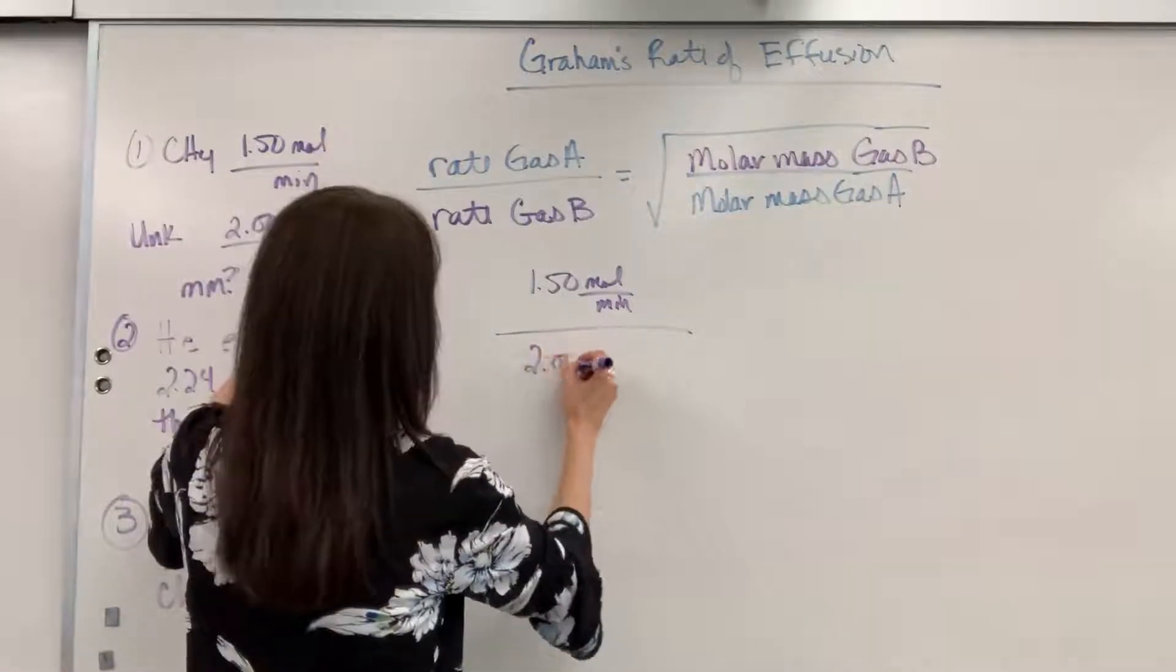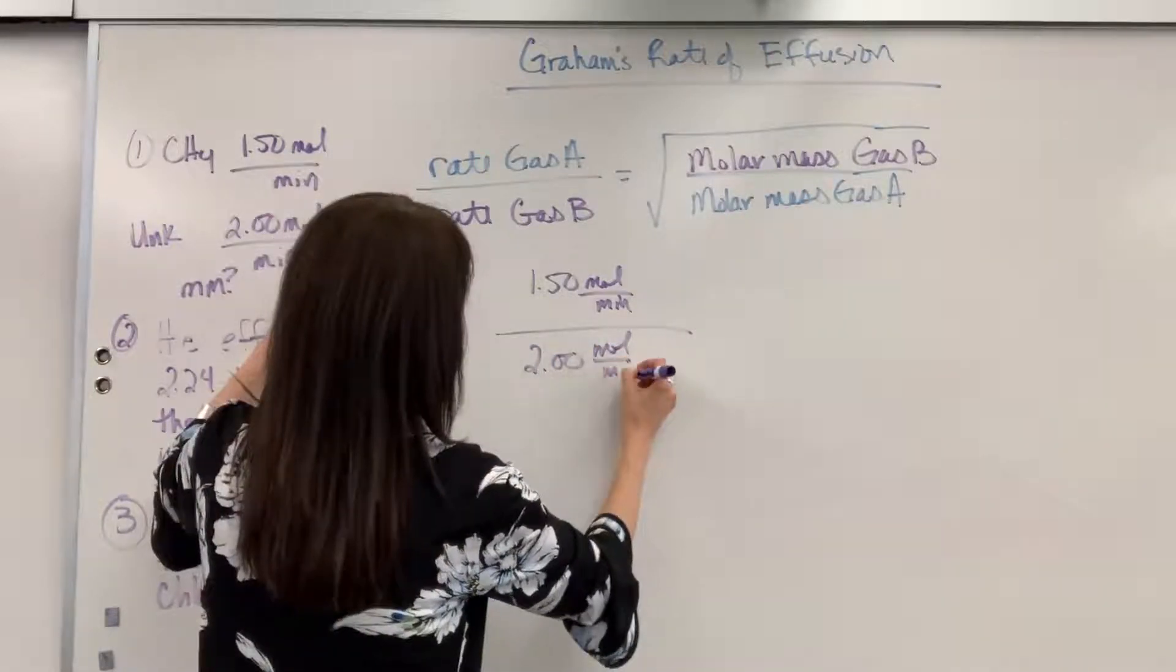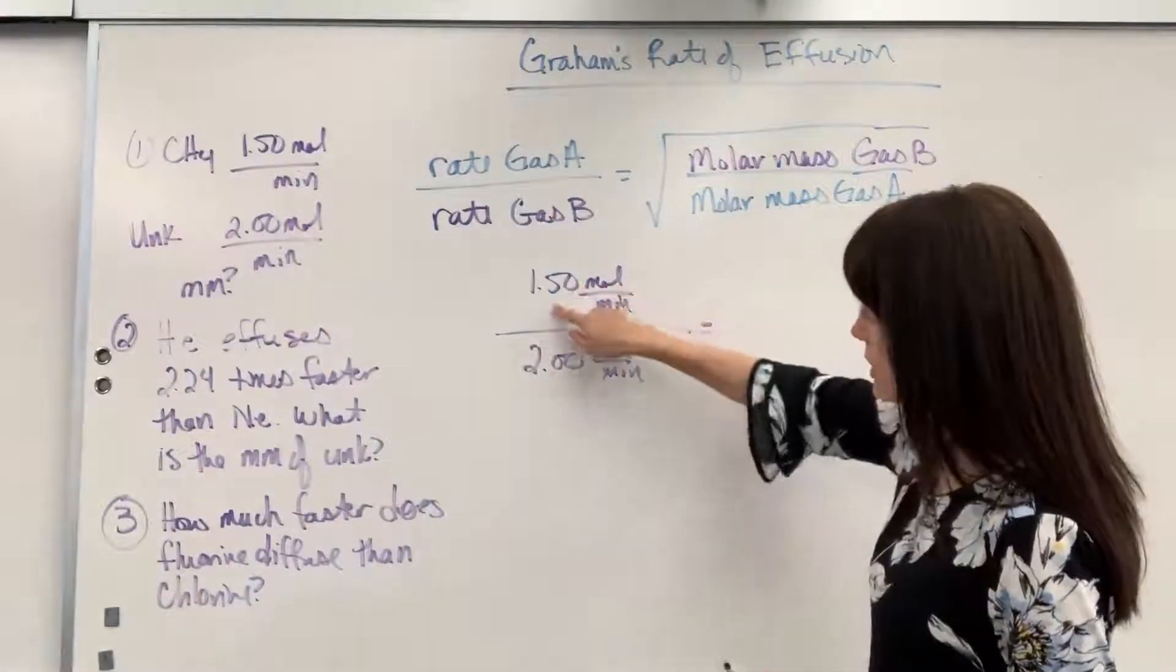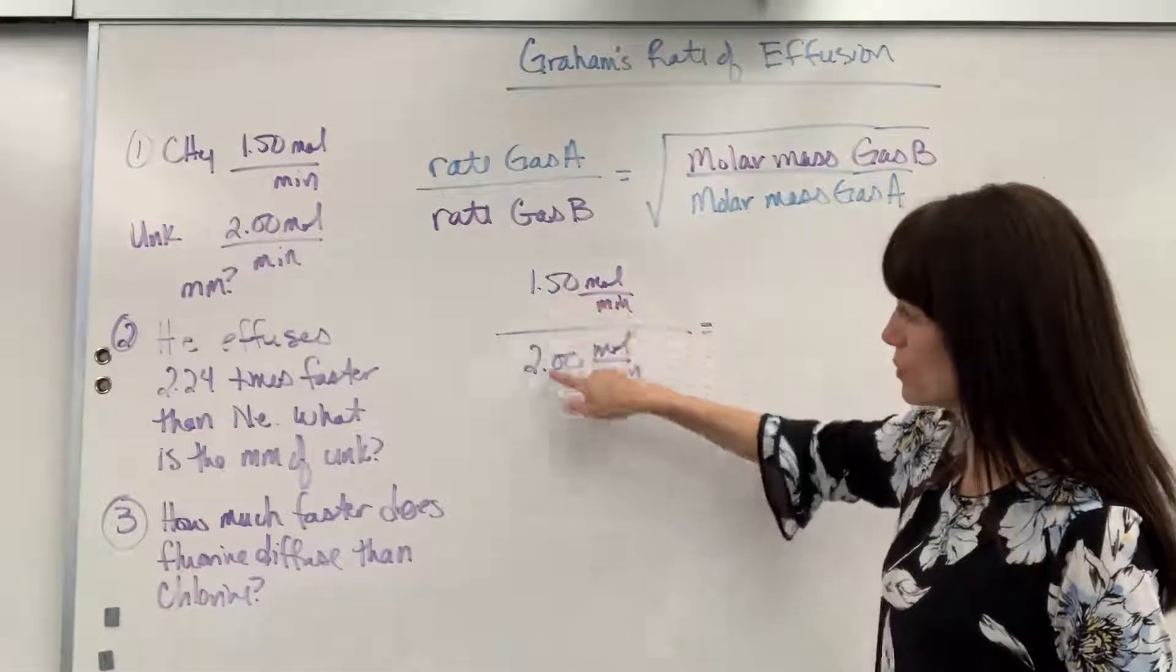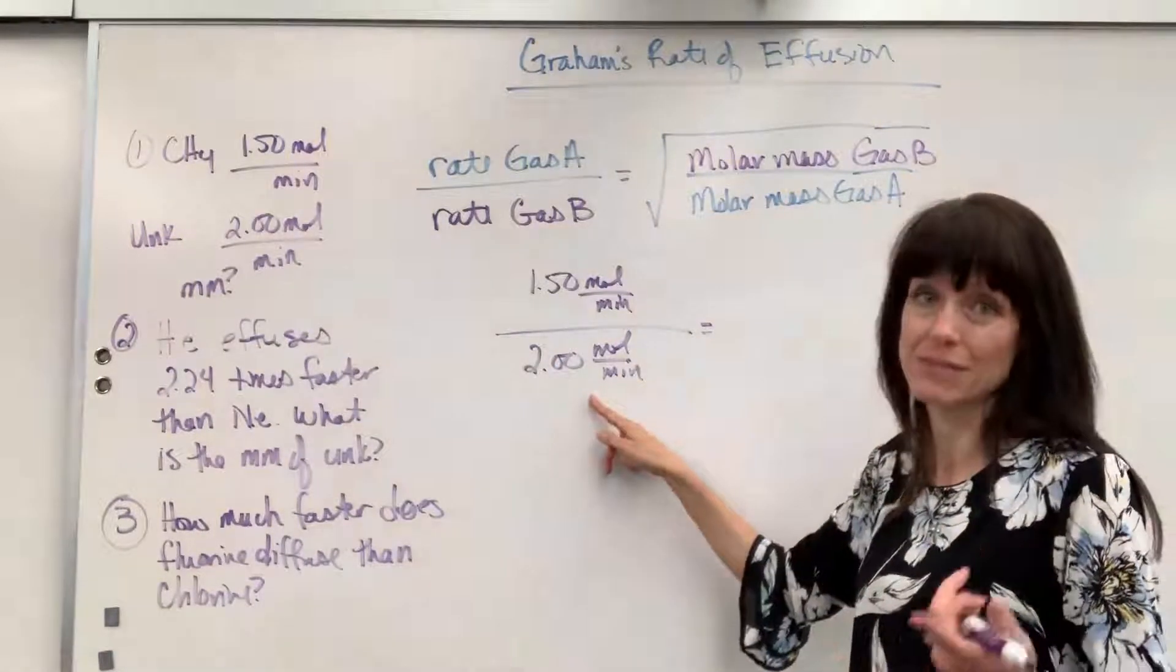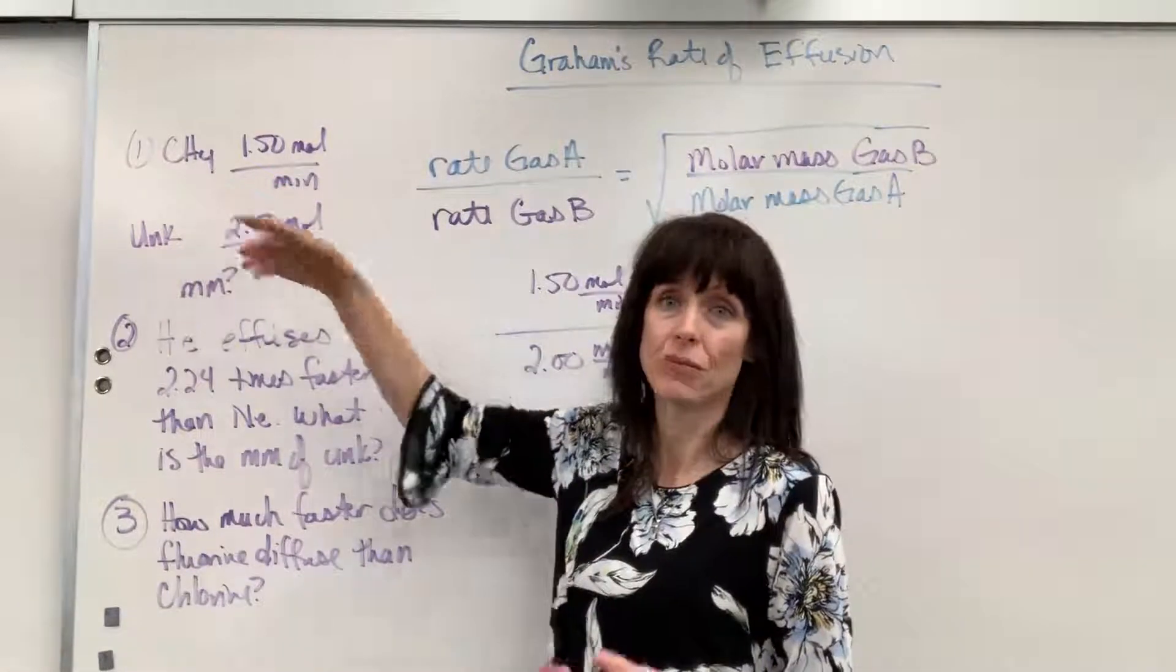Now, I want to point something out. This is a slower effusion than this unknown. So, right away, I know that this molar mass is going to have to be smaller than methane. Right off.